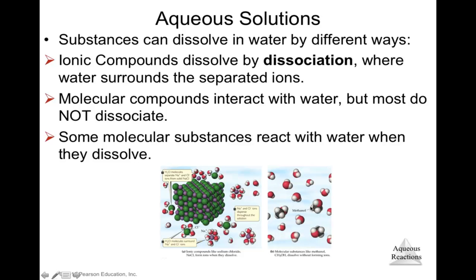Methanol is a molecular compound — it dissolves but is not dissociated. In the dissociation of sodium chloride, ions separate from the crystal structure, producing a cation and an anion. With methanol, you just separate the molecules from each other but do not produce ions. So methanol is just dissolved, while sodium chloride undergoes both dissolving and dissociation.